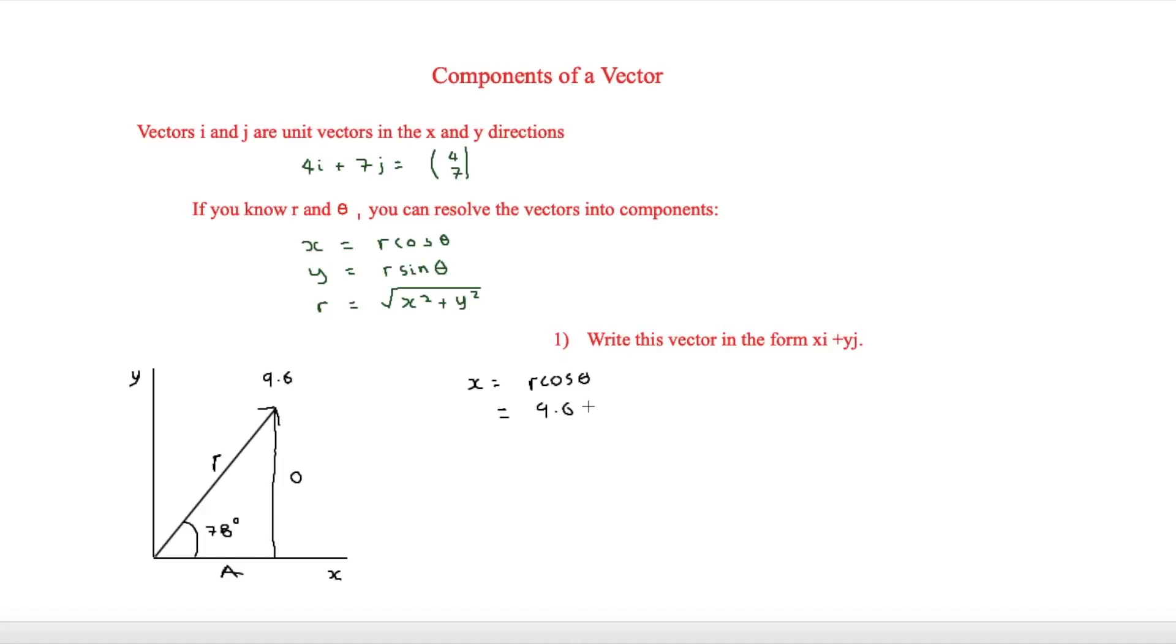And that's going to be 9.6 because that's what r is. And then cos and then we know that theta is equal to 78 degrees. So 9.6 cos 78. Type that into your calculators and you'll get about 1.99 which is basically 2.